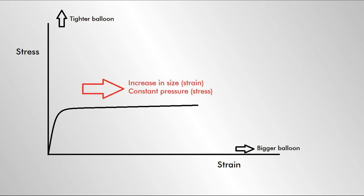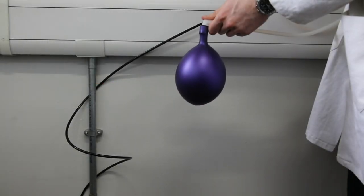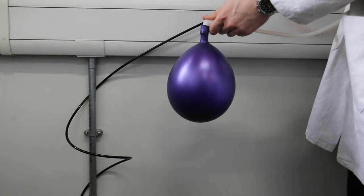The curve then flattens out. This is when the balloon is inflating at a constant rate, so the pressure remains constant, but the strain is increasing with the increasing size of the balloon.